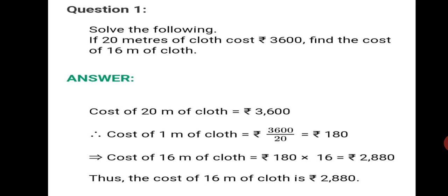Now, look at the question — find the cost of 16 meters of cloth. We want 16 meters. Easy. We have 1 meter of cloth costs Rs. 180. Therefore, 16 meters of cloth will cost 180 multiplied by 16, which equals Rs. 2880. Thus, the cost of 16 meters of cloth is Rs. 2880. We just divided first, found the cost of 1 meter, and then multiplied by 16. This is called the unitary method.